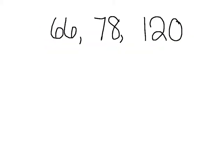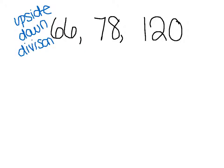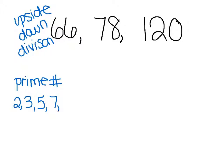Let's start with just some numbers. I'm going to teach this using something I call upside-down division. The first important thing is knowing what a prime number is — a number that can only be divided by itself and one. List out the prime numbers starting from the smallest: 2, 3, 5, 7, 11, 13, and so on. We'll always work with these starting from the smallest.